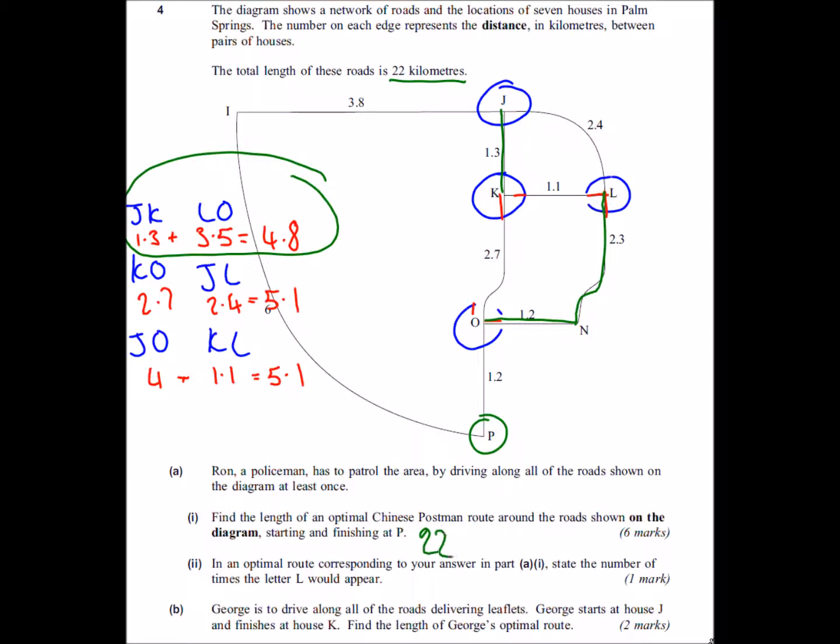We're going to do the 22 that we were given at the start and we're going to add on the 4.8 that we've just found, and that's going to give us 26.8.